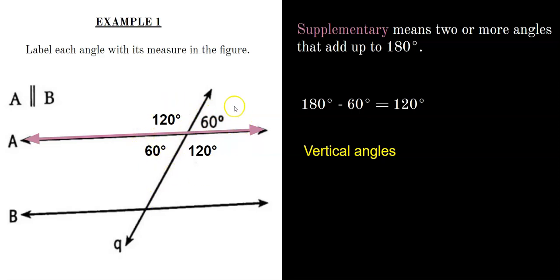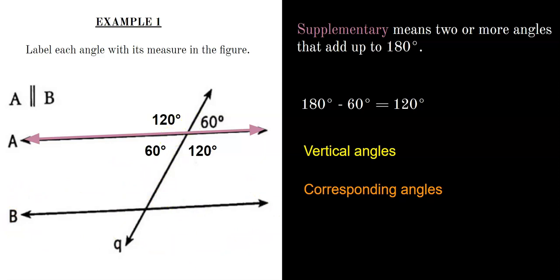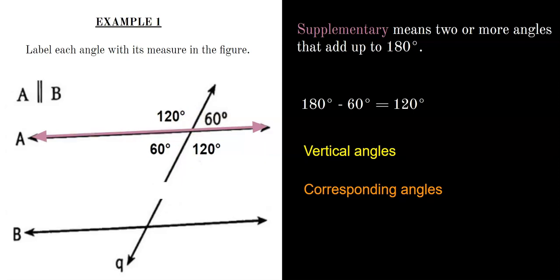Now to figure out the four angles at line B, we use corresponding angles. If we split the transversal and lay line B on top of line A, the angles match identically. So the angles at line B are the same as those at line A, finishing the problem.